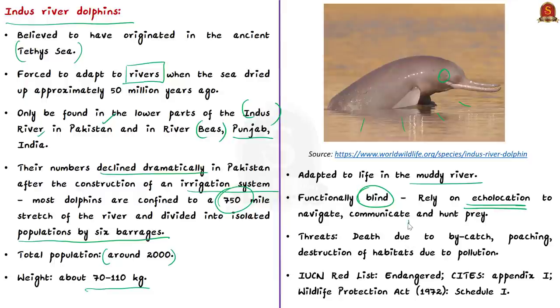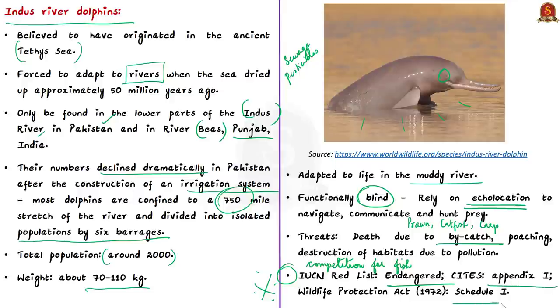Now on talking about the threats posed to them, more Indus dolphins are dying as a result of accidentally being caught in the fishing nets which is also known as bycatch. Some communities who rely heavily on fishing think of the Indus river dolphin as a competition for fish. So poaching still occurs despite a ban on hunting and apart from these, untreated sewage, industrial pollution, pesticides from sugarcane and cotton crops also pollute the river which causes destruction to their habitats. The Indus river dolphins are listed as endangered on the IUCN red list and they are included in appendix 1 of CITES. Importantly they are also included in Schedule 1 of the Wildlife Protection Act of 1972.